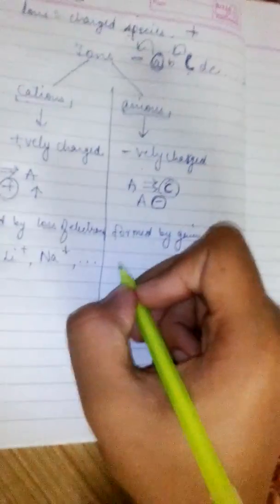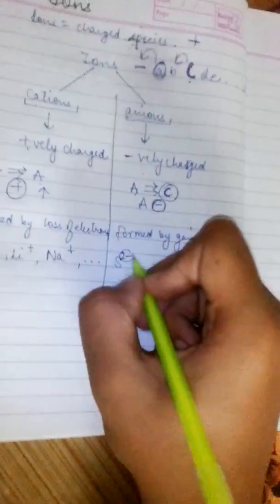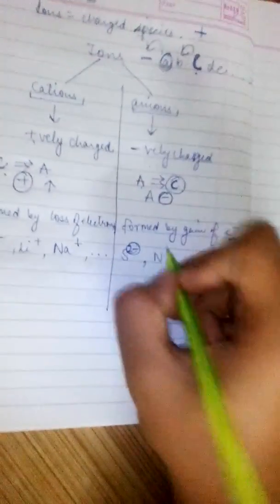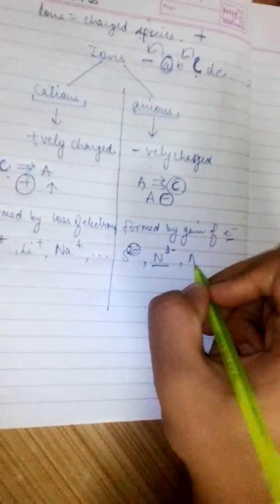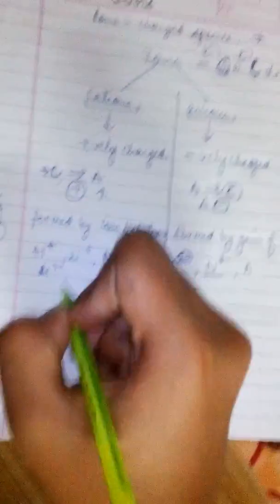For anions we have S2 negative because it loses two electrons, N3 negative because it loses three electrons. Over here you could add Al3 positive, Mg2 positive, and so on.